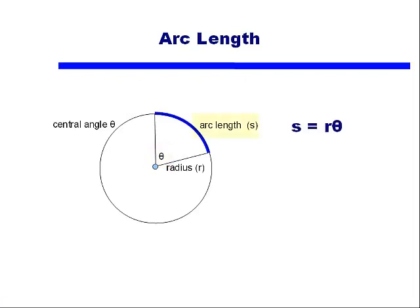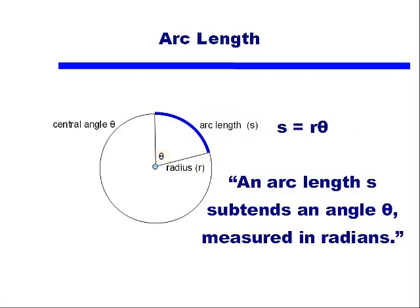That is, the length of the arc length S is equal to the length of the radius times that central angle. We can also say this in words as such.